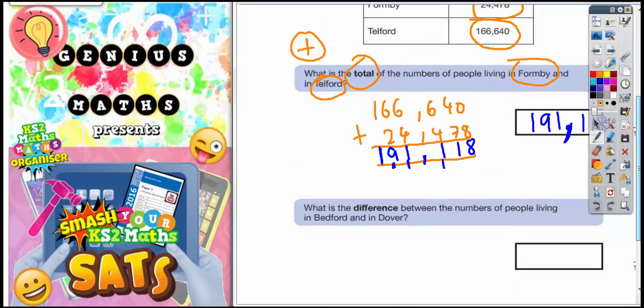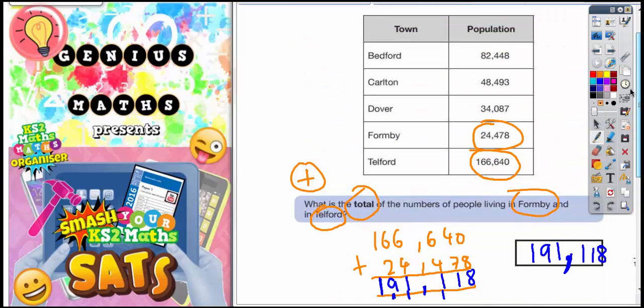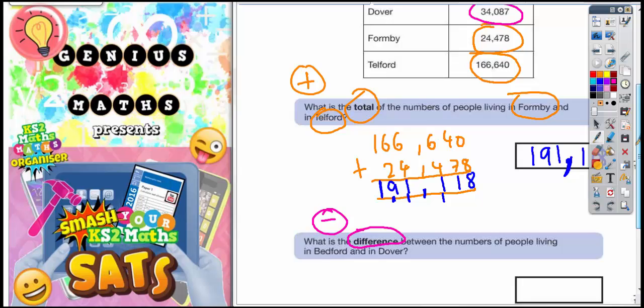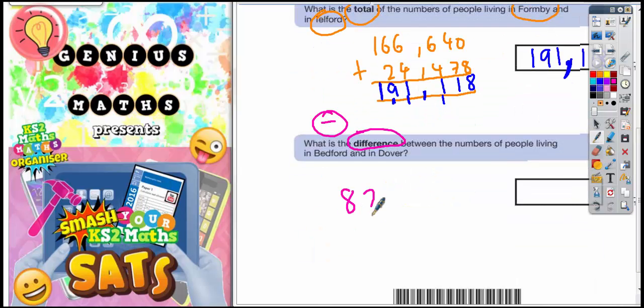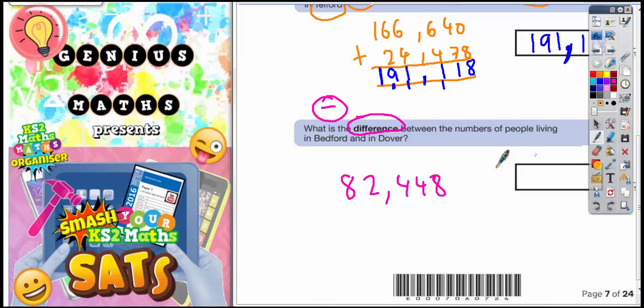The second part of this question: what is the difference between the numbers of people living in Bedford and Dover? Well, in the same way that total means add, difference means subtract. So we need to find Bedford and Dover. Bedford's 82,448, Dover's 34,087. So we need to subtract those numbers: 82,448 minus 34,087.